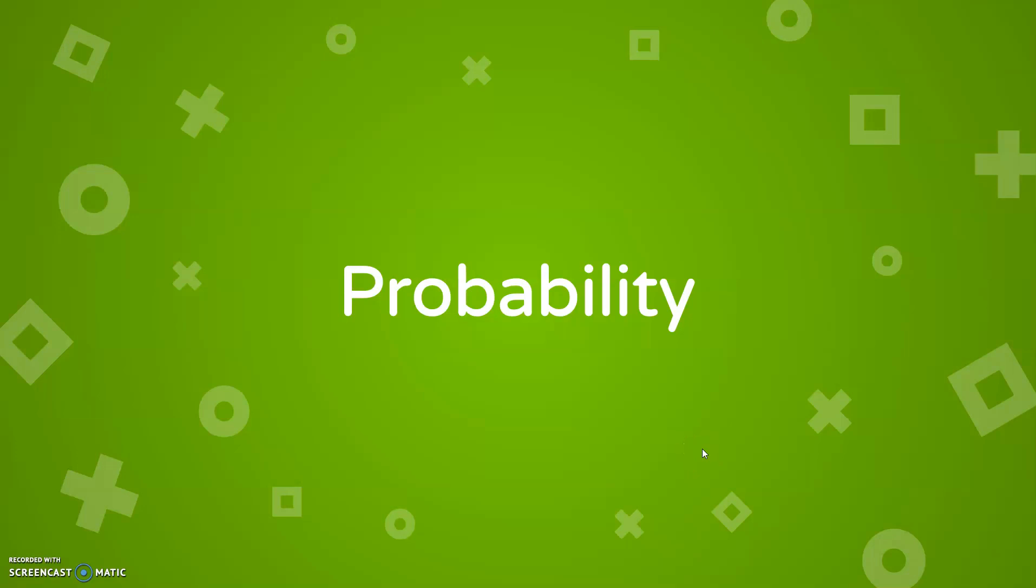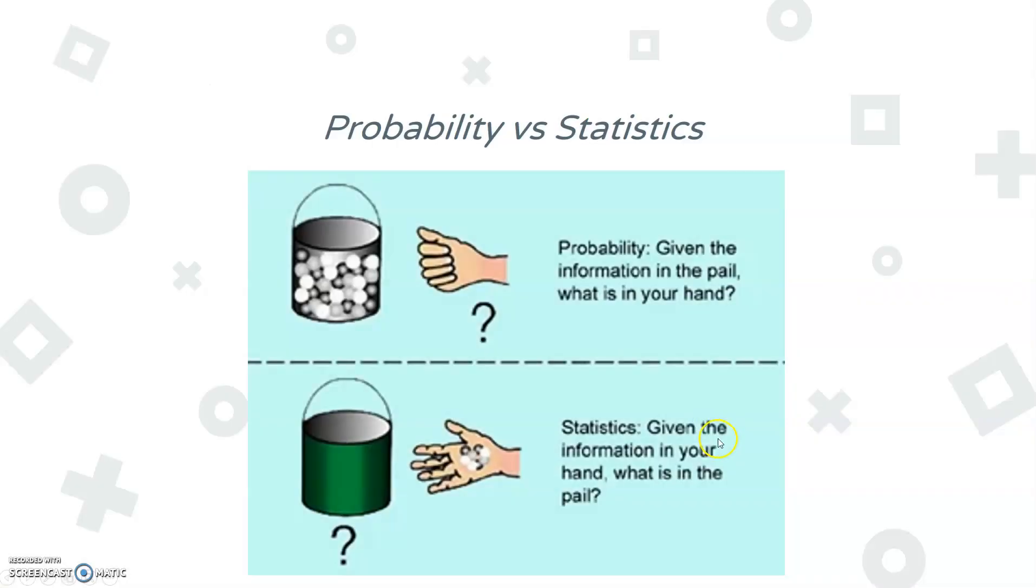Today we're going to be talking about probability and statistics. Within engineering, we actually have to deal with probability and statistics. So what is probability? Probability is looking at a large sample of something and then guessing what's in your hand, while statistics says what's in your hand, what's inside the bucket.